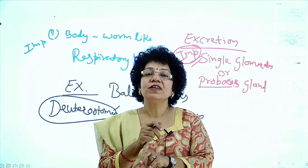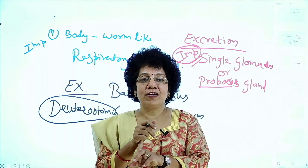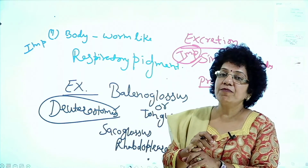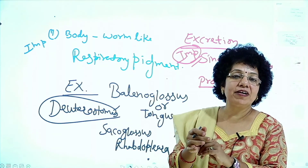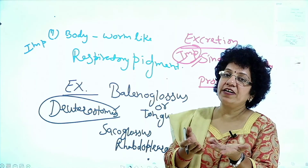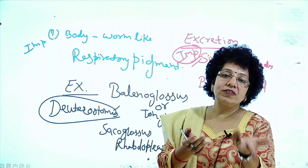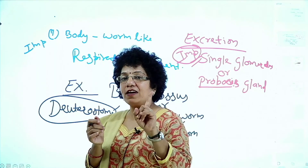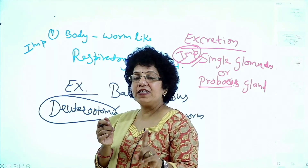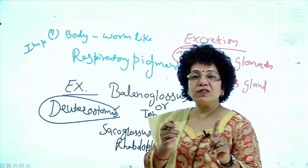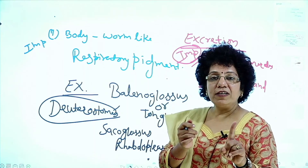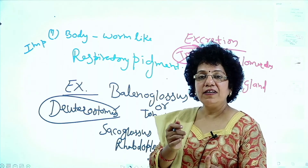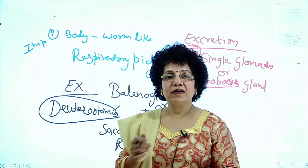Proboscis gland or single glomerulus. The respiratory pigment is vanadium, open circulatory system is present, Tornaria larva is present, and the enterocoelous cavity is divided into protocoel, mesocoel, and metacoel.